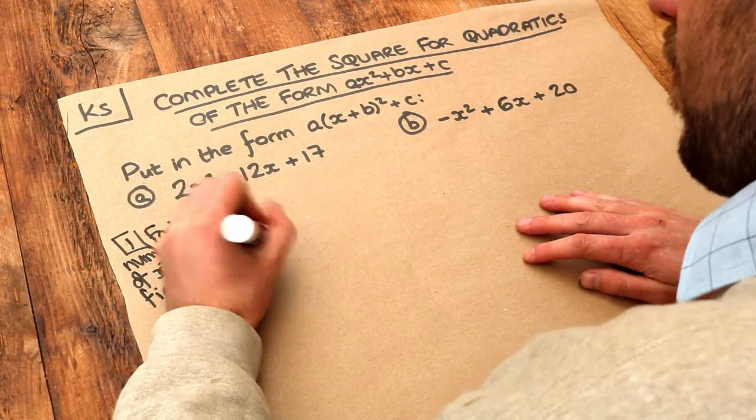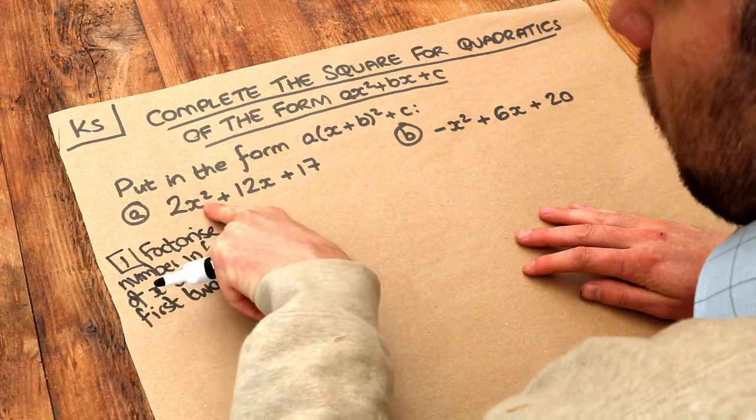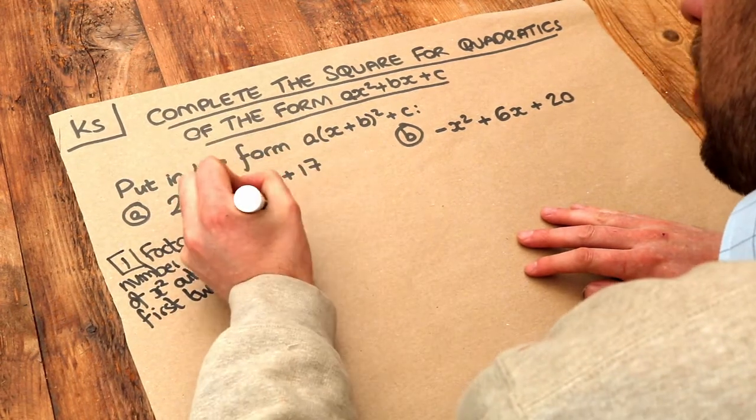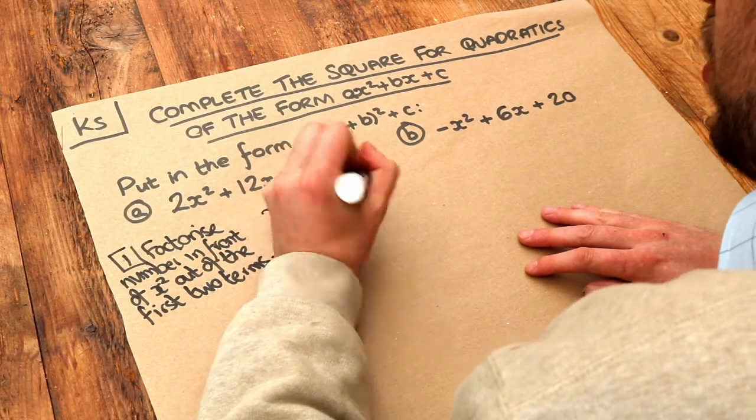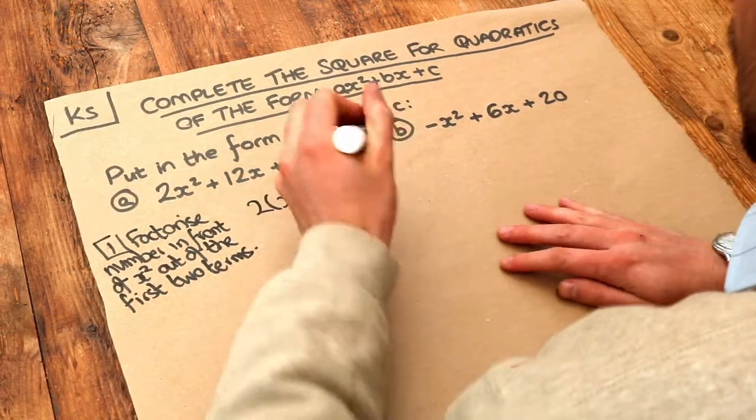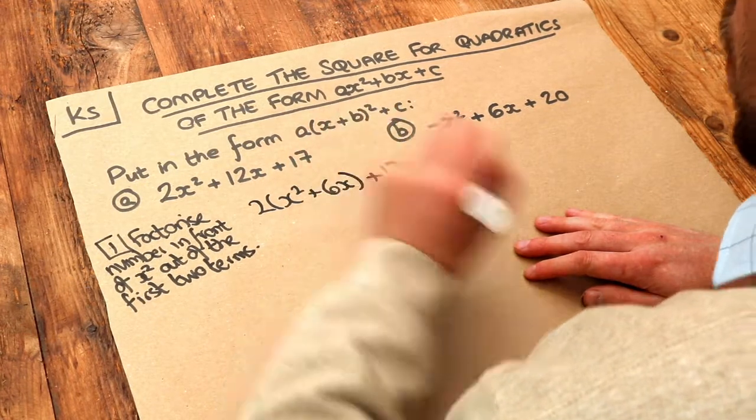So if we do that, we factorise out that 2 in front of the x squared out of the first two terms we get 2 brackets x squared plus 6x because 2 times 6x is 12x and that plus 17 is just going to be outside minding its own business.